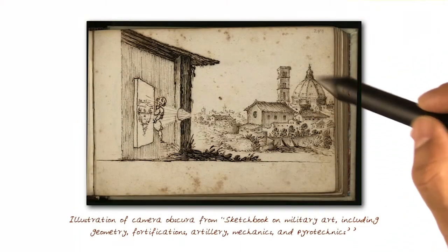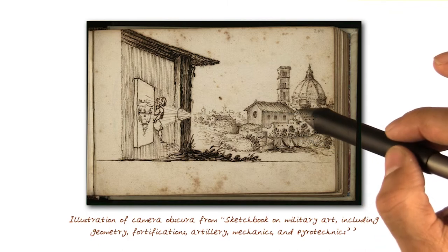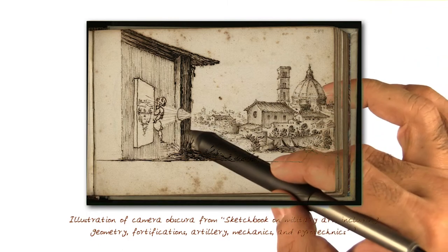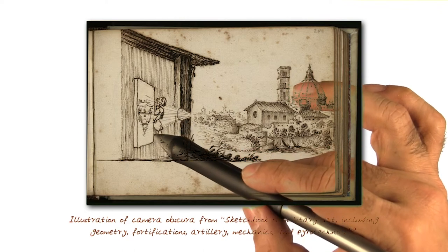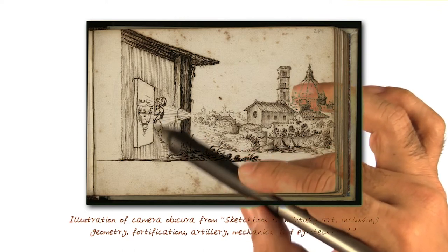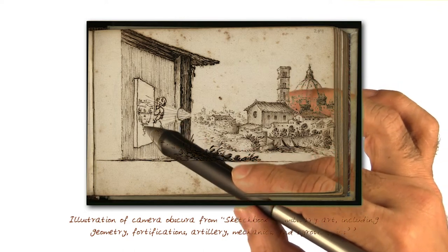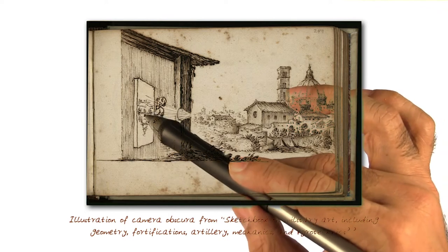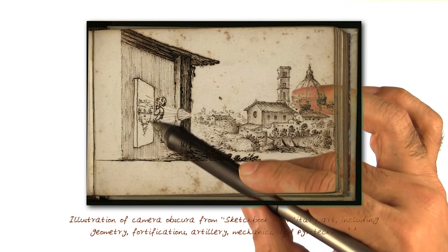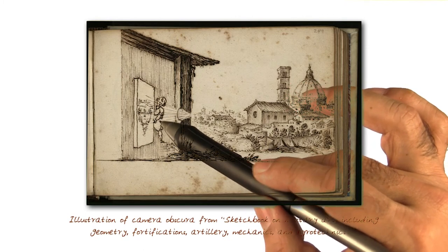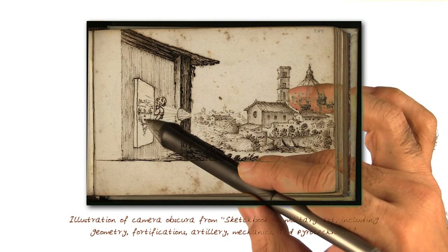This was a classic method used in the old days, where 3D scenes like this would be captured through a pinhole upside down. People would use various types of sketching mechanisms to preserve this, doing sketching or painting on a wall. Of course, we now have many different methods of preserving this, including films and digital sensors.